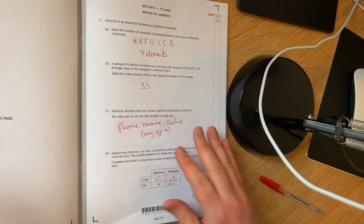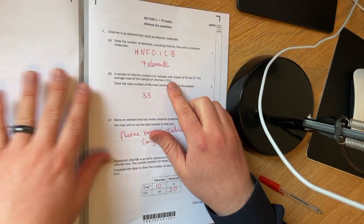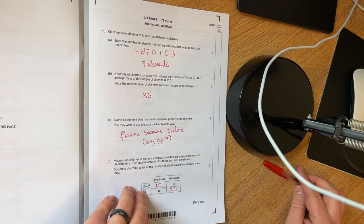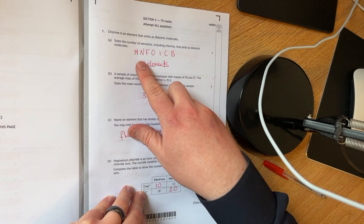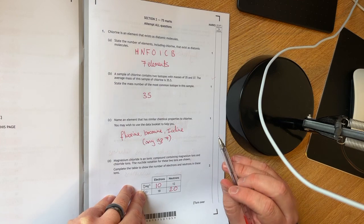Question number one. It's asking you to state the number of elements including chlorine that exist in diatomic molecules. I teach this as have no fear of ice cold beer, which means there are seven elements that are the diatomics.